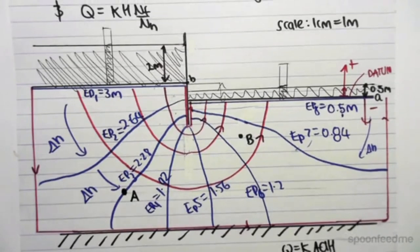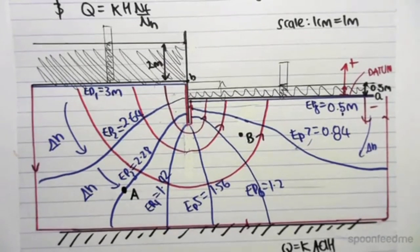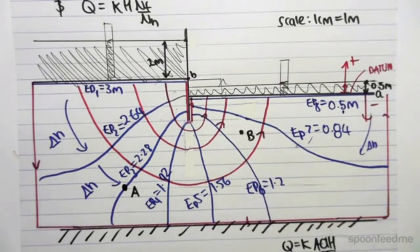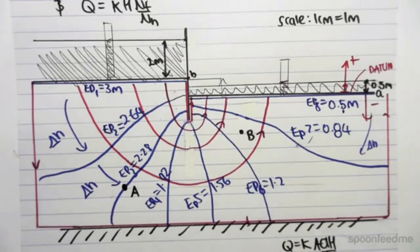We're continuing with the example from the previous video, except I'm now going to be finding all these values at point B, which is not on an equipotential line. So the process is very similar.